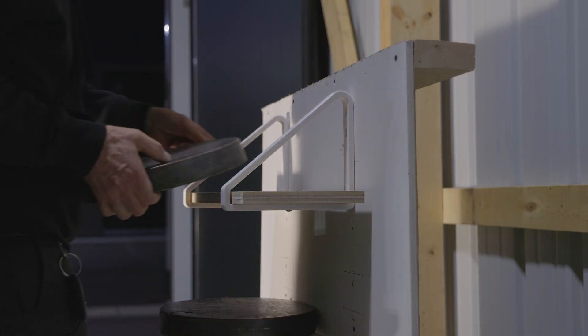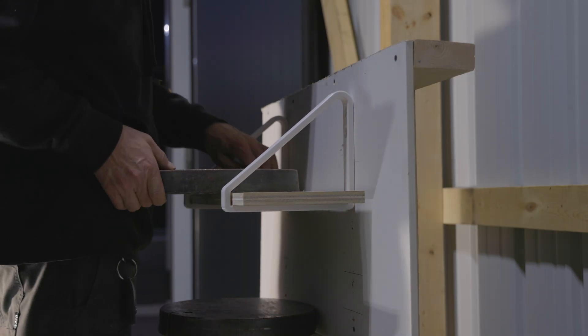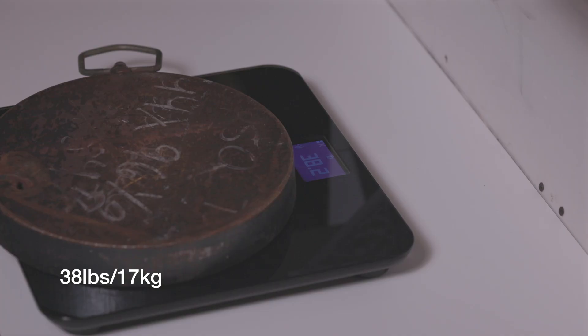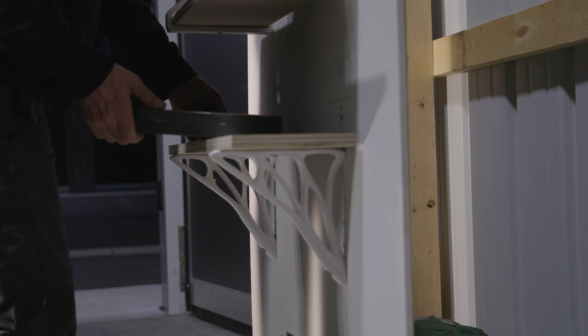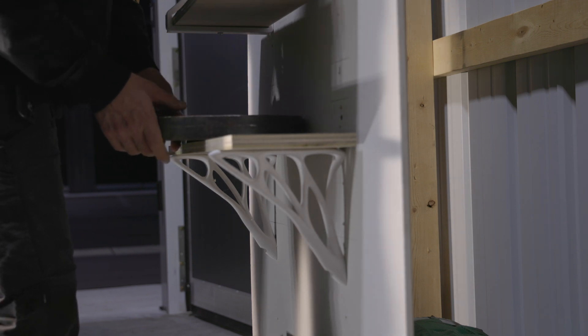So we installed the brackets in a non-temperature controlled space. On each shelf, we placed a weight that was approximately 38 pounds. We felt that this was at the higher end of what someone would realistically want to place on a 3D printed shelf long term.